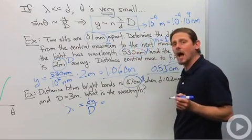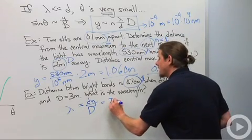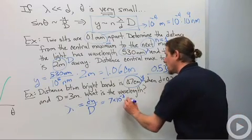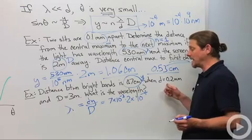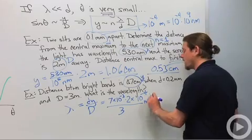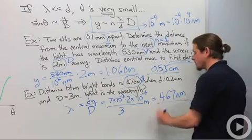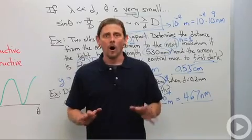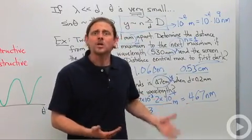Again, I want to do everything in SI units. So I'll change this 0.7 centimeters to 7 times 10 to the minus 3. That's y. I'll change this 0.2 millimeters to 2 times 10 to the minus 4. So that's my d. And then I'll divide by capital D, which is 3. And this will be in meters. And if you do that math, you'll end up finding that it's 467 nanometers. So it's going to be a little bit of like a bluish green aquamarine color. More blue.